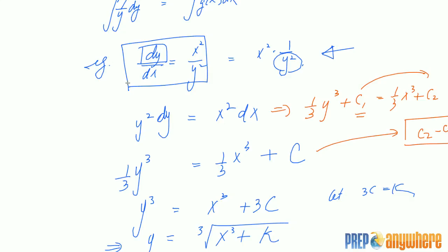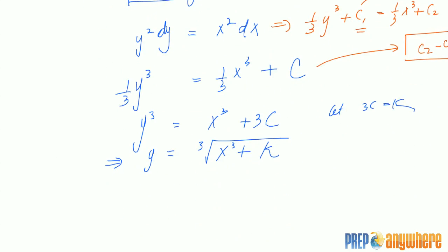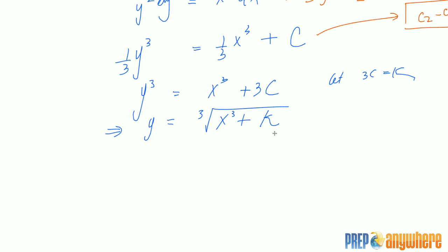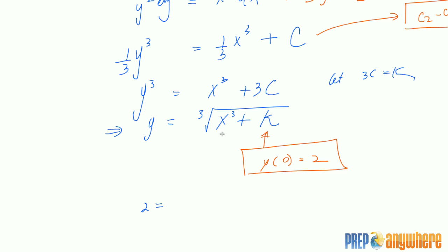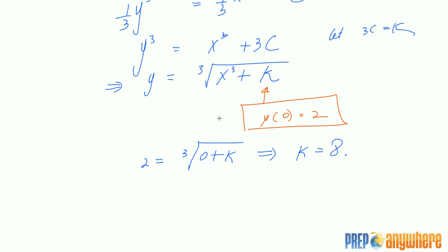Just like normal antiderivatives, if you're given an initial value, you can find the value of k. Suppose x equals 0 and y equals 2 — that's the initial value. We replace y with 2 and x with 0, which leads to k being equal to 8. So our equation is the cubic root of x cubed plus 8.